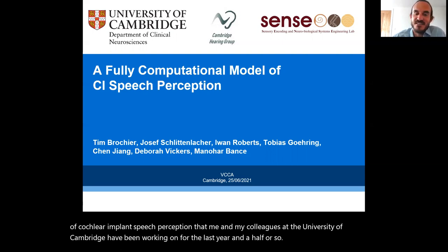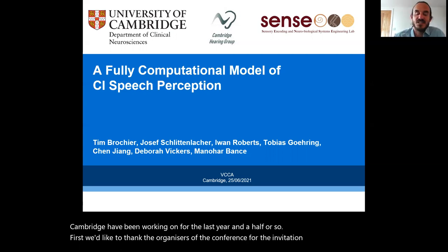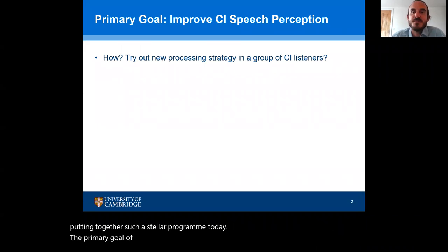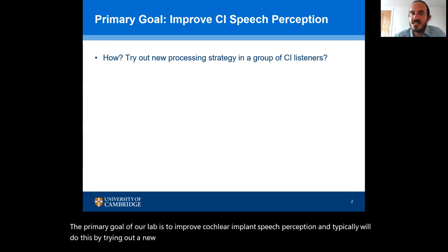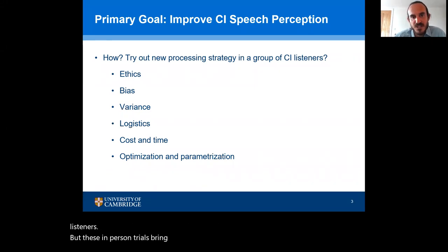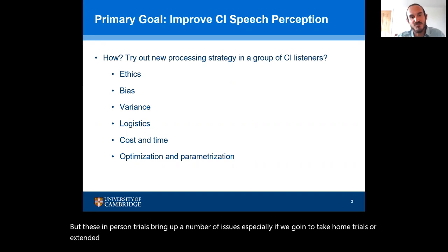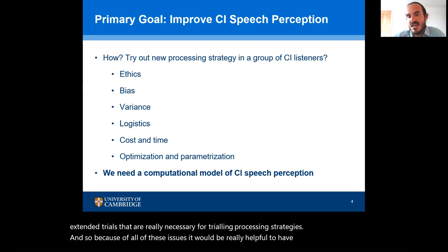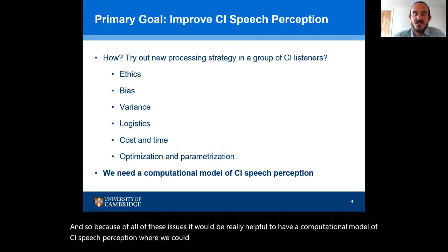First off, we'd like to thank the organizers of the conference for the invitation to speak and for putting together such a stellar program today. The primary goal of our lab is to improve cochlear implant speech perception, and typically we'll do this by trying out a new processing strategy or stimulation technique in a group of CI listeners. But these in-person trials bring up a number of issues, especially if we go into take-home trials or extended trials that are really necessary for trialing processing strategies.